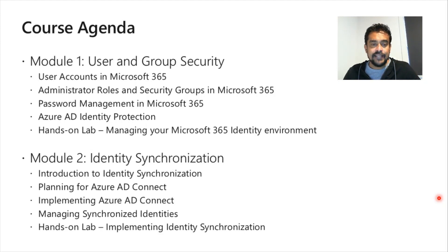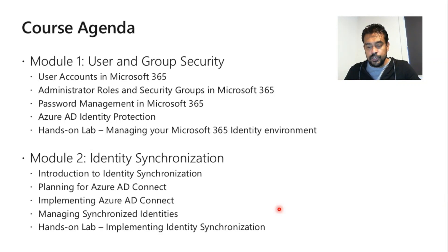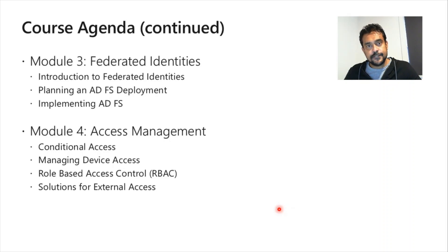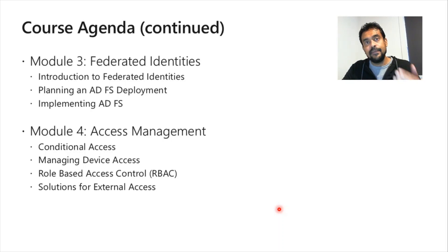Module 2 covers identity synchronization — specifically on-premises Active Directory Domain Services to Azure Active Directory synchronization and authentication methods. Module 3 covers federated identities: how to plan and implement Active Directory Federation Services deployment.